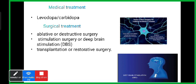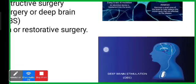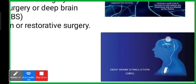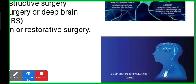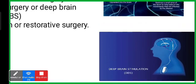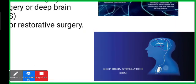Deep brain stimulation is often described as a pacemaker because it works similarly. It is the most effective electrical surgical procedure for Parkinson's disease patients. Electrodes are implanted into certain brain areas and connected by long wires that travel under the skin down the neck to a battery-powered stimulator placed under the skin of the chest.